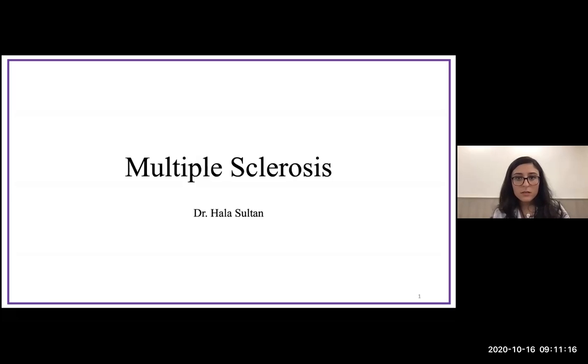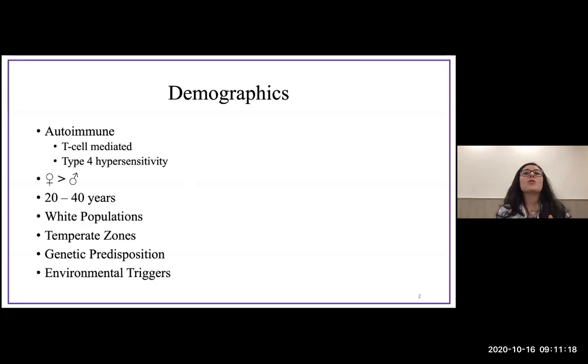A briefing on demographics of multiple sclerosis. It's an autoimmune disease, a T-cell mediated type 4 hypersensitivity disease that is usually more common in females than males. There's a two-to-one female-to-male ratio, and it's more common in middle-aged individuals, in white populations, especially those who live in temperate zones, probably owing to low vitamin D.